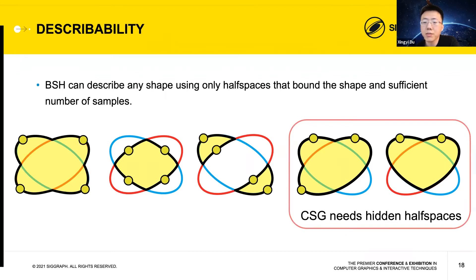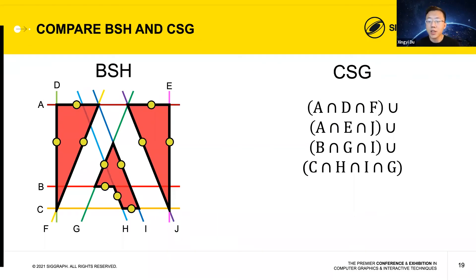This makes our representation simpler for both design and reverse engineering. Although the theoretical upper bound of number of samples needed to describe the shape can be large, in practice we find that most shapes only need a small number of samples, thanks to our sample connected requirement. The use of samples instead of Boolean expressions also allows BSH to represent a shape in a more succinct manner than CSG. For example, to represent this Adobe logo shape using 10 linear half spaces, BSH only requires 11 sample points, one on each segment of the Adobe logo shape. But CSG would need a much more complex boolean expression.